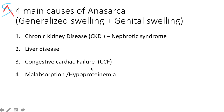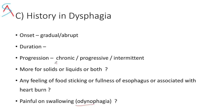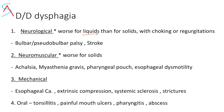Ask about dysphagia — difficulty in swallowing. Pain during swallowing is called odynophagia. For dysphagia, ask onset, duration, progression, and whether it is more for solids, liquids, or both. If dysphagia is more for liquids, there is a neurological cause like bulbar or pseudobulbar palsy or stroke. If more for solids, it could be neuromuscular causes like myasthenia gravis or pharyngeal pouch. There could also be mechanical causes like esophageal carcinoma.